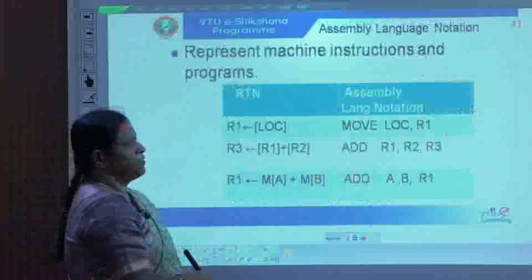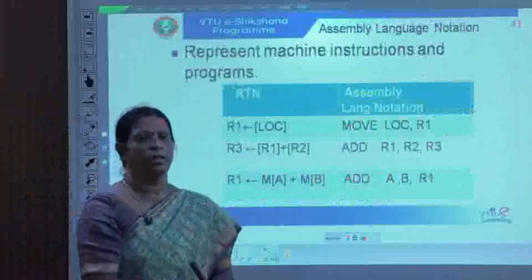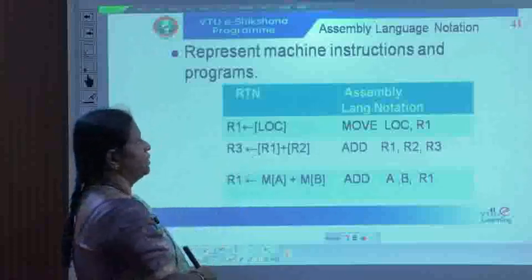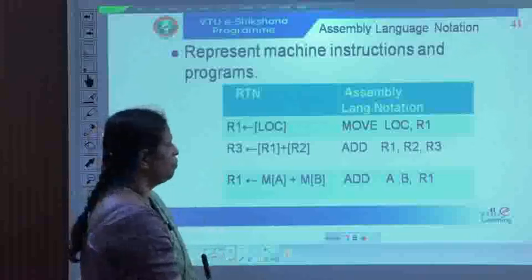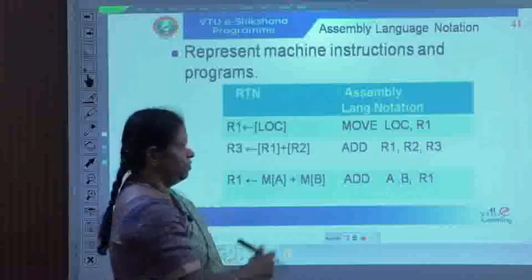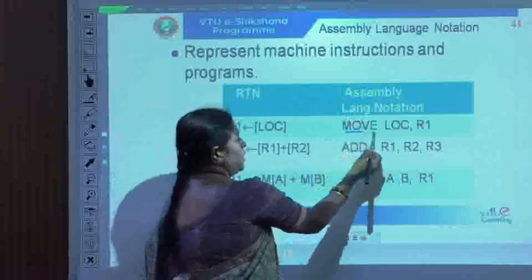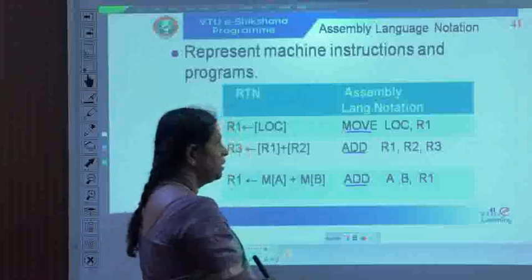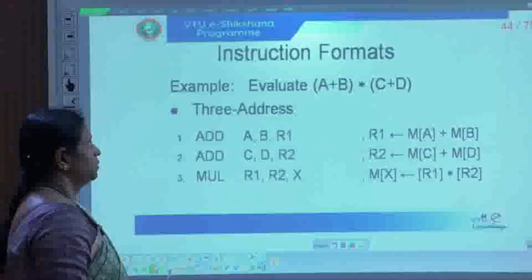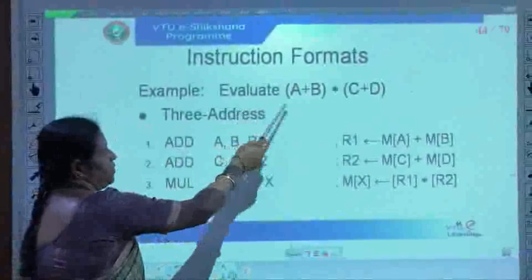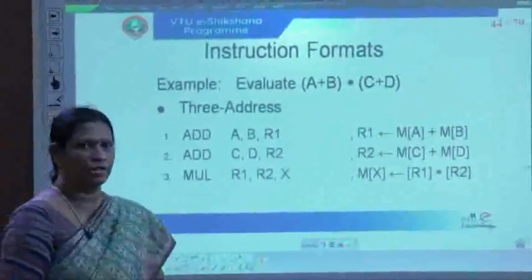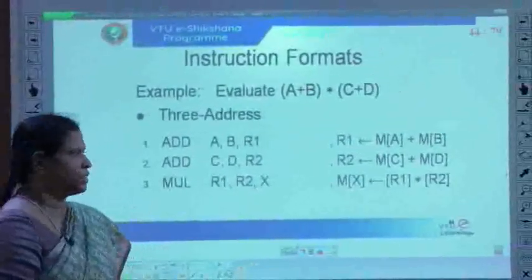Register transfer notation was not flexible enough as instruction complexity increased, so assembly language notation was introduced. Assembly language is simpler to represent and more flexible than RTN. Machine instructions and programs can be written more easily using assembly language notation, where every numeric code is used to represent an instruction. A typical exam question asks you to evaluate an expression like A + (B × (C + D)) using 3-address, 2-address, and 1-address instruction formats.